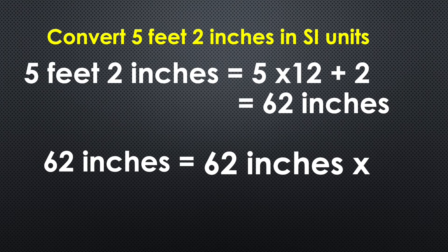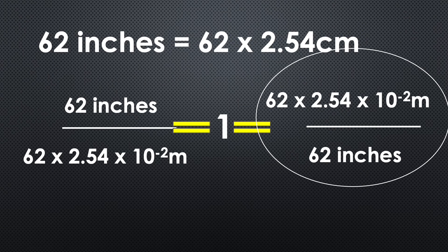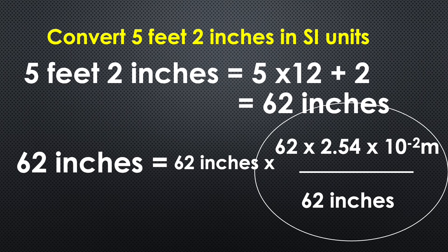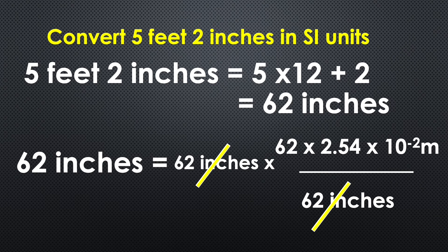So to solve our question: 62 inches. In the equation which contains meter in the numerator side, we are going to use that one. So when you apply this one, 62 inches and 62 inches will be cancelled out. So 62 into 2.54 into 10 raise to minus 2 meter.